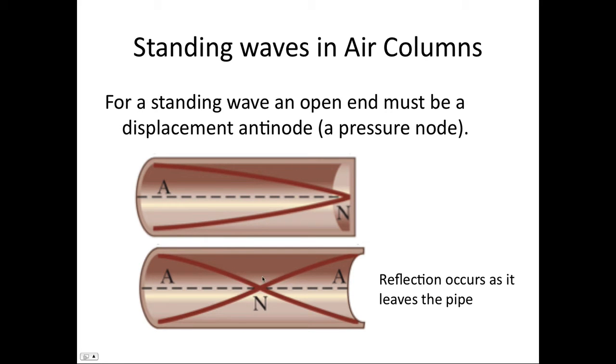If a pipe is open at both ends, then both ends are antinodes. So we have pressure nodes here and displacement antinodes. Now it's not obvious in an open pipe that reflection will occur and so you actually get a standing wave. But when this wave moves out of the pipe, it's like moving into a different medium because it's no longer confined around here. And so when the wave moves from one medium to another, some of it is reflected.